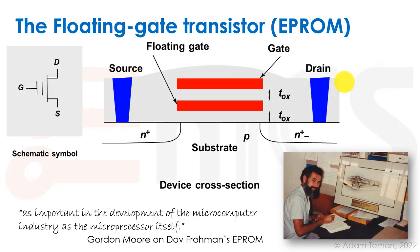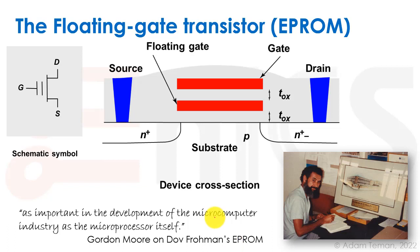The floating gate transistor is what enabled flash memory, SSDs, and USB flash drives. It was invented by Dov Froman, an Israeli engineer at Intel in its early days. Gordon Moore said it was as important a development to the microcomputer industry as the microprocessor itself. Its invention is also credited with bringing Intel to Israel, driving the high-tech industry there for the last 40 years.